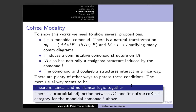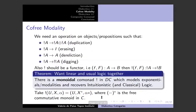The more usual way nowadays is the linear-non-linear logic style — Nick Benton's old result — which says there is a monoidal adjunction between DC-C and its cofree co-Kleisli category for the comonad.